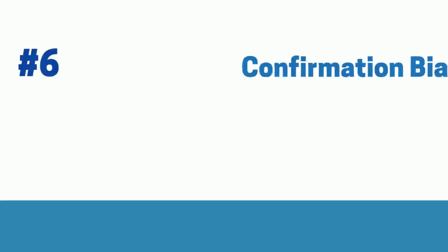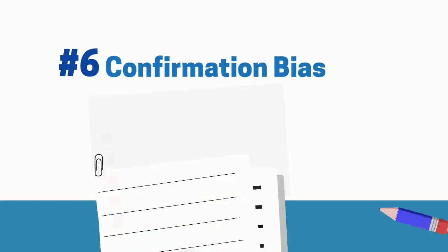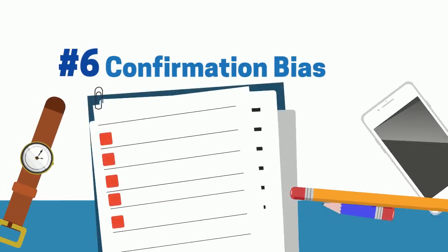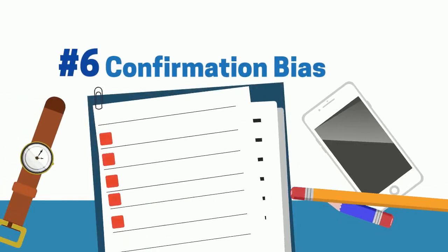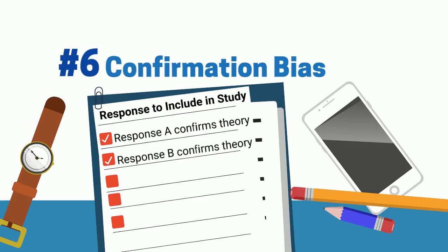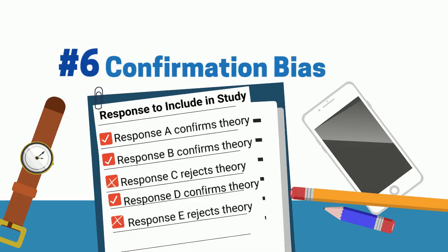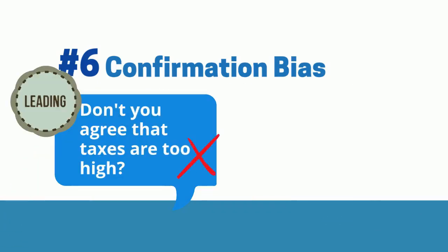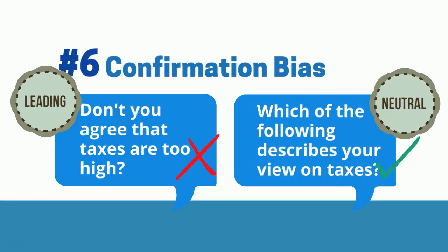6. Confirmation Bias. This bias occurs on the researcher side when the survey itself is conducted to confirm a hypothesis, rather than simply gauge opinion. Such researchers will give extra weight to responses that confirm their belief and dismiss evidence to the contrary. In many cases, researchers will pose leading questions rather than neutral versions.